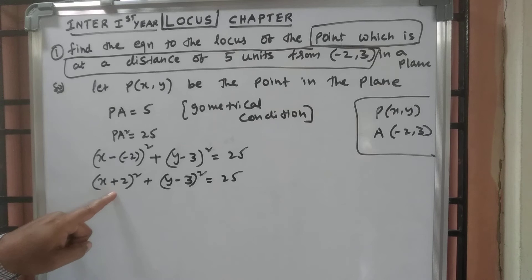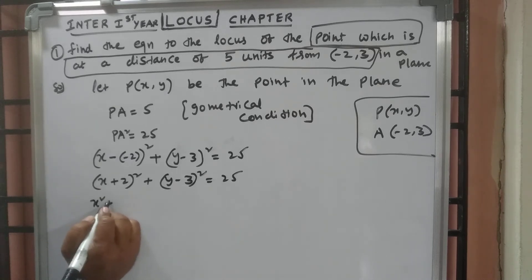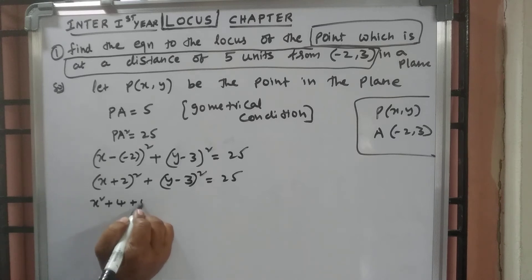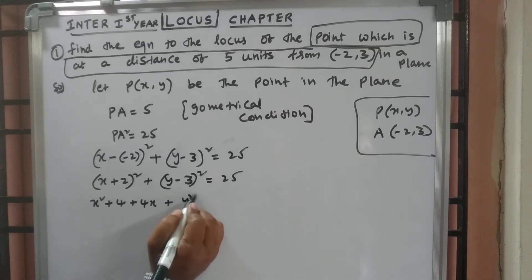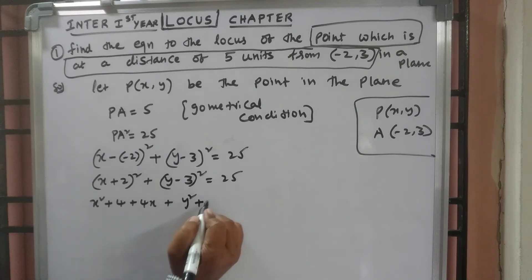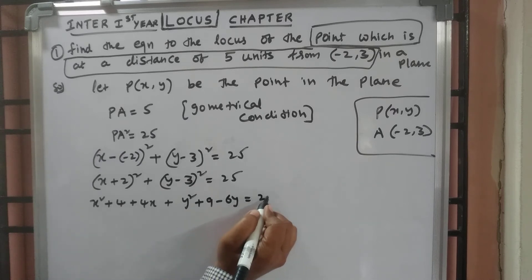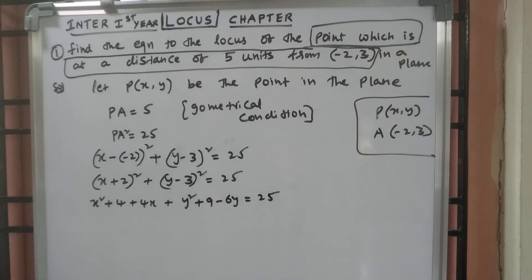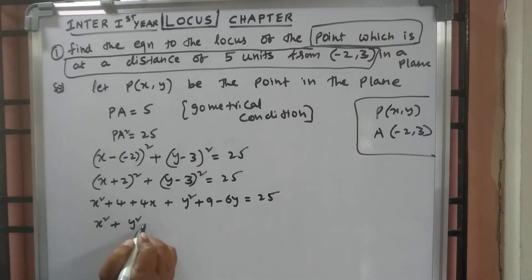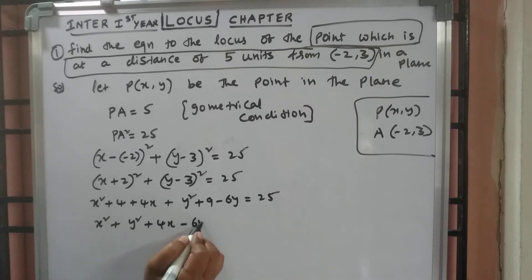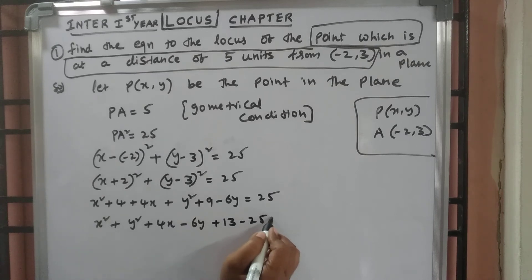X plus 2 whole square is of the form A plus B whole square. Applying the identity, that gives X square plus 4X plus 4. And Y minus 3 whole square is of the form A minus B whole square, expanding to Y square minus 6Y plus 9 equal to 25. Writing in order: X square terms, then Y square terms, then X terms: 4X minus 6Y, constant 4 plus 9 is 13 minus 25 equal to 0.